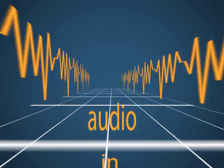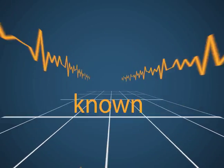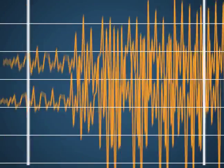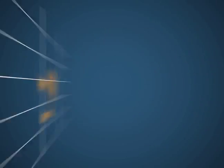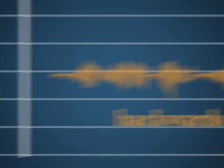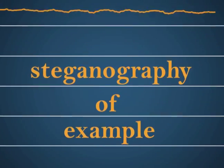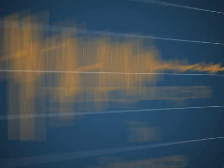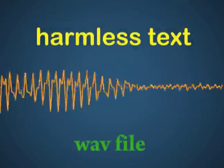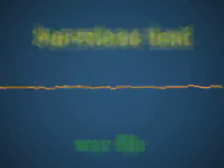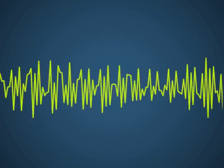Hidden messages in audio are better known. We've all heard of playing a record backwards to hear a satanic message — that is an example of steganography. You can also hide text in WAV files with the right software. The process is very similar to hiding text in an image.